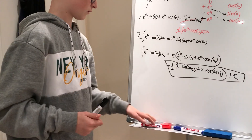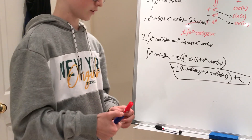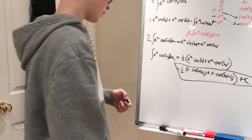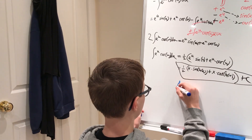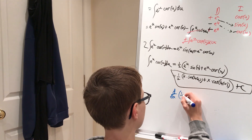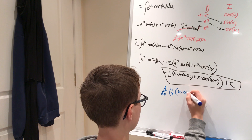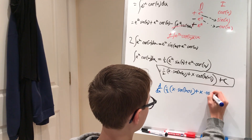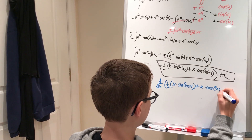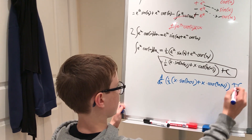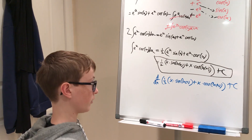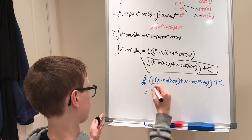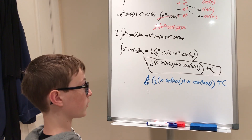To check, we'll differentiate the answer. We want to verify that d/dx of one half times (x sine ln x plus x cosine ln x) plus C gives back cosine of ln x. The derivative of a constant is zero, so we focus on the inside. We'll need to use the product rule twice since there are two products here.